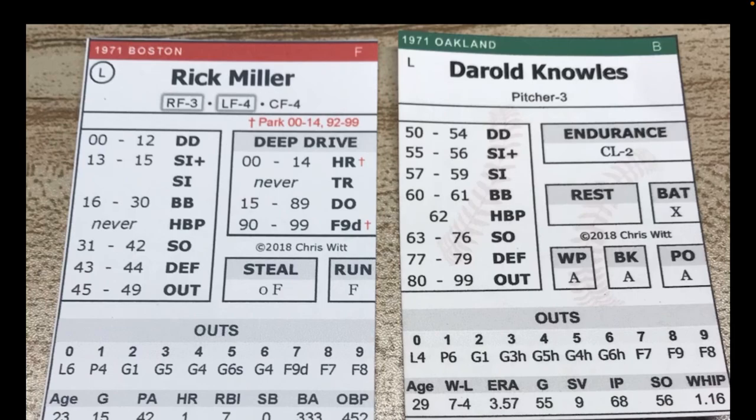Hey there everybody, this is Tony Porter and this is a quick video to explain the splits in Deep Drive Baseball. You have a pitcher Darryl Knowles and a batter Rick Miller. When that lefty is circled on Rick Miller's card in the upper left-hand corner, that means he shouldn't be hitting against a lefty specialist or a lefty at all.